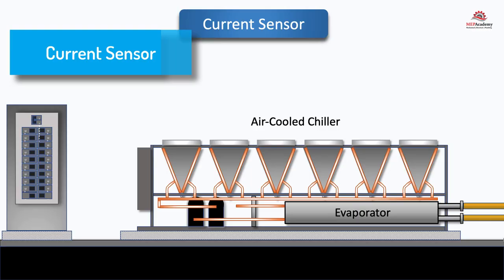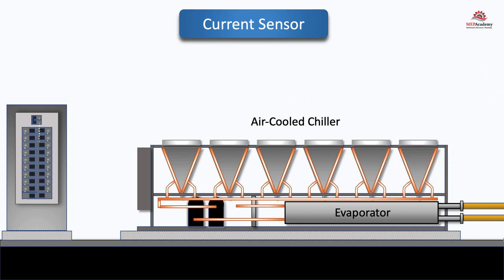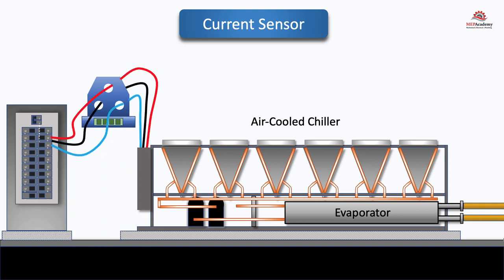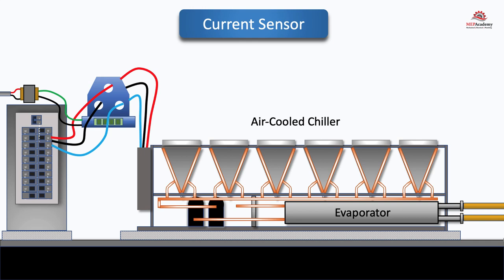Current sensor. A current sensor, also known as a current transducer, is used to measure the electrical current flowing through a conductor or piece of equipment. It plays a key role in tracking energy usage of equipment by monitoring the current draw. The current sensor is typically installed around the conductor carrying the electrical current of the equipment being monitored. The sensor may be a split-core design, allowing it to be easily clamped around an existing wire without interrupting the electrical circuit. The output signal of the current sensor is typically an analog voltage or current that is proportional to the measured current.